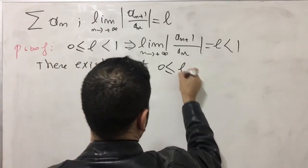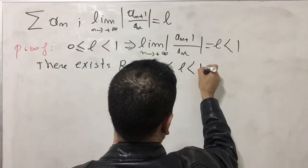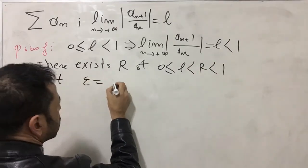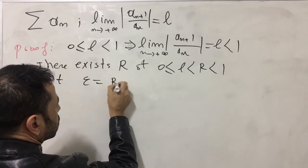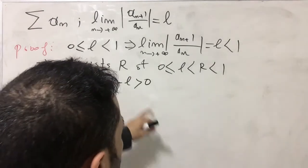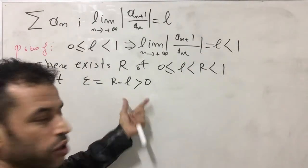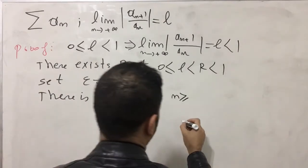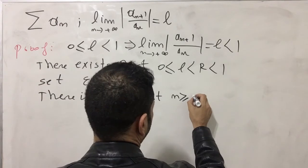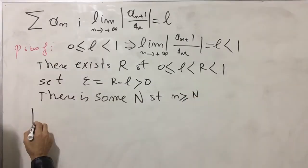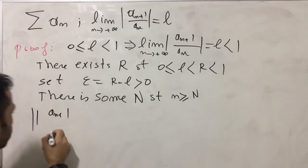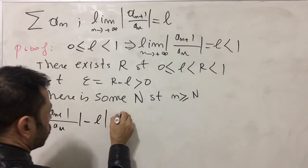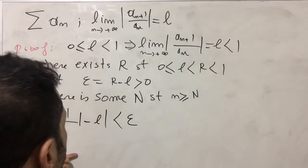Since L is strictly less than 1, there exists R such that L < R < 1. Let epsilon = R - L, which is strictly greater than 0, so epsilon is a small arbitrary positive number. By the definition of a limit, there exists a capital N such that for all n ≥ N, we have |a_{n+1} / a_n| - L < epsilon.